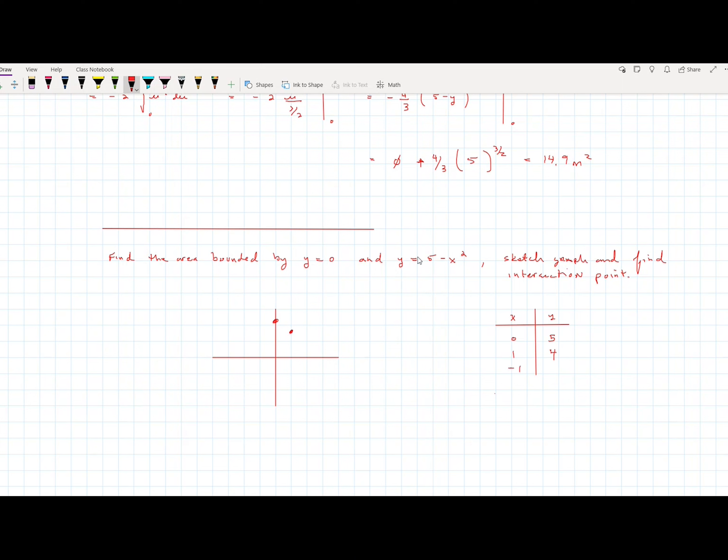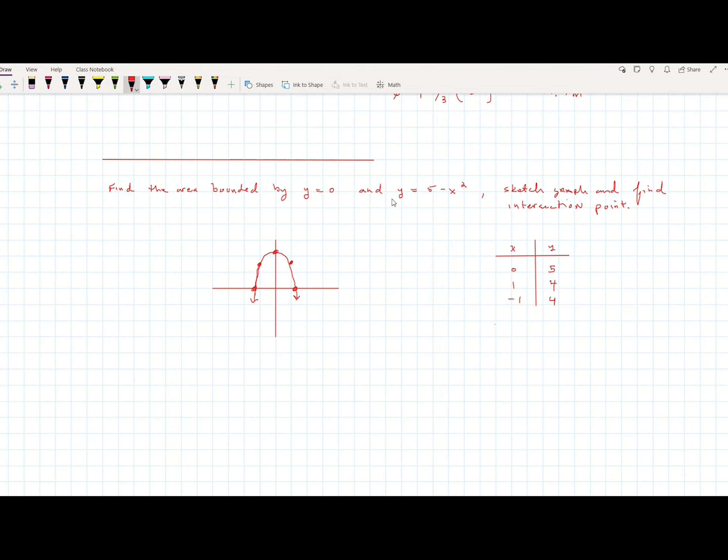And then at that point, you should kind of have an idea of what's happening, right? Three points should give you a relative idea. The only thing really to figure out now would be the boundaries. Where are these intersection points here? And those intersections there would be given by equaling the two equations, right?